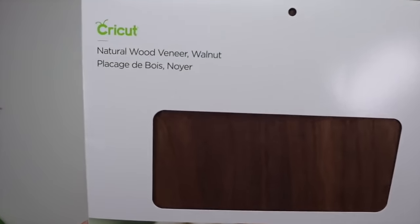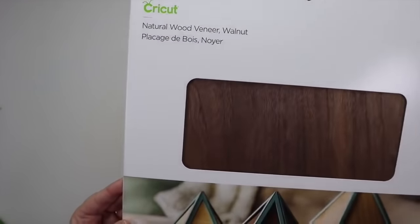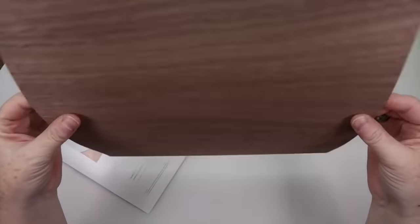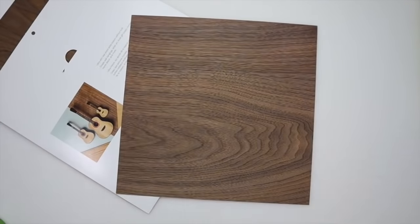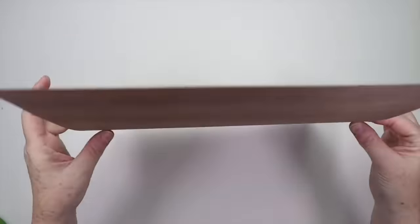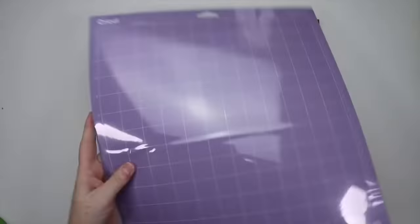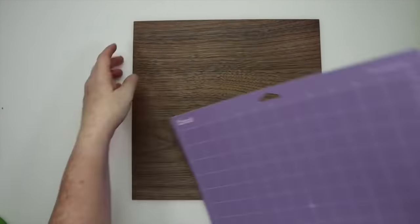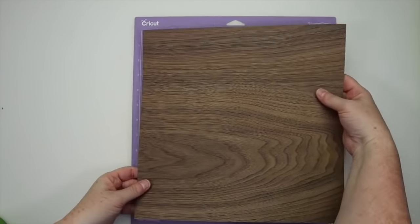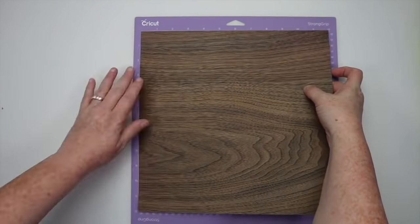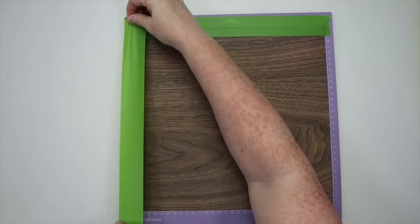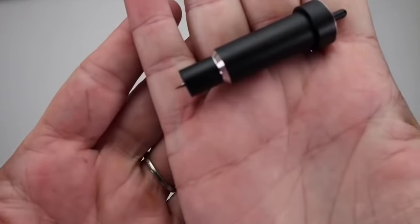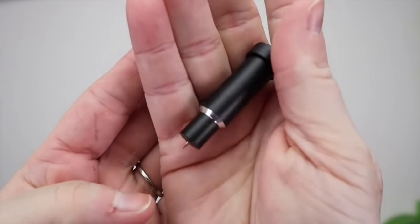Earrings are always a great item to make with your Cricut because you can use all kinds of materials. Today this one is going to be with some wood veneer. Now these earrings I actually made last year but I wanted to show them to you again in case you missed it. You could use leather - I'll show you some in just a second. For this I'm going to start with a strong grip mat and a piece of the veneer from Cricut. I'm going to set it down on the mat and tape it down with some painters tape. The next important step is to change out your blade to the deep blade.